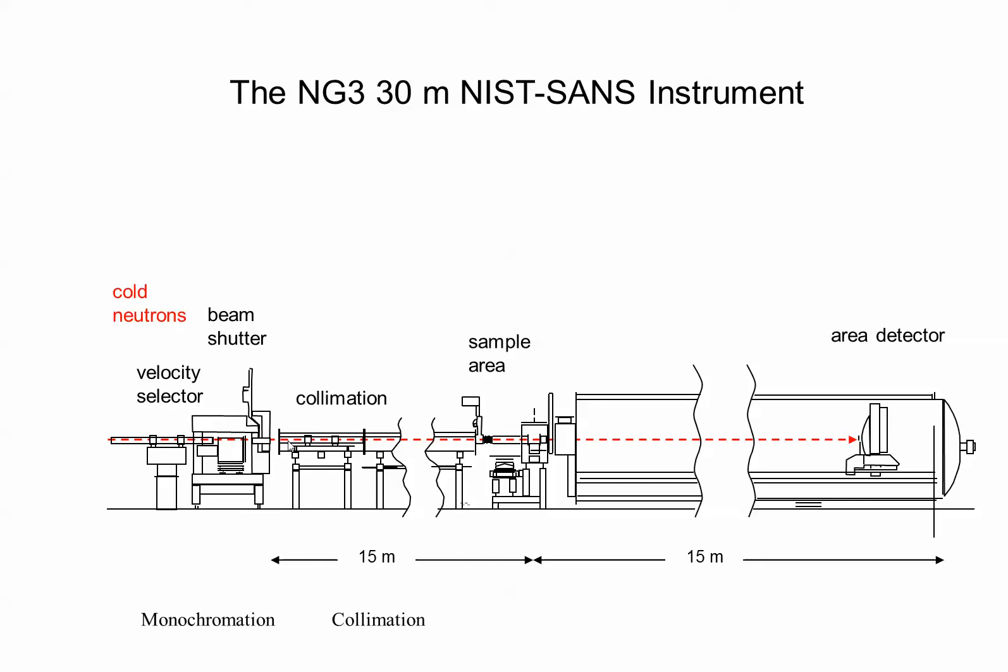then collimation using two apertures, one source aperture and one sample aperture to define the beam, scattering from the sample, then detection using an area detector. It can be moved close to the sample and so on.